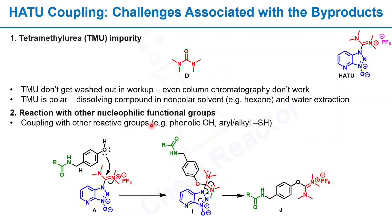The second challenge associated with HATU is its reaction with other nucleophilic functional groups. If you are trying to make an amide bond and at the same time have reactive functional groups like OH or SH in your reactant, these functional groups can react with the HATU coupling reagent and form undesired impurities.